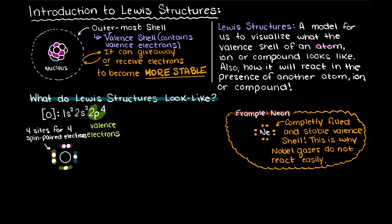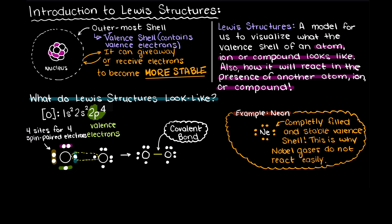As we stated earlier, Lewis structures are a model that allows us to better understand how atoms, ions, and compounds will react and interact with one another, and we will get into more detail on this in the future. As a quick example, consider if we had another oxygen atom present. Our oxygen atoms both only have 6 valence electrons — they would both be much happier with 8 electrons. These two atoms can actually share electrons with one another. This is called a covalent bond, when our atoms are sharing a set of electrons, and in a Lewis structure we denote this with a line.